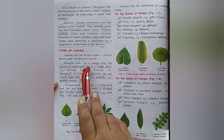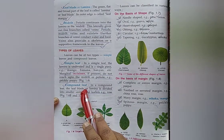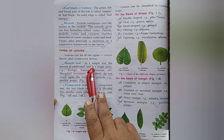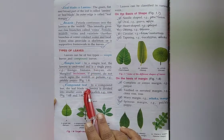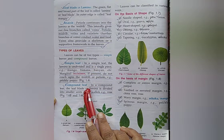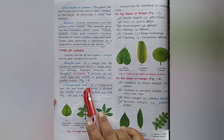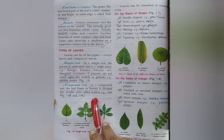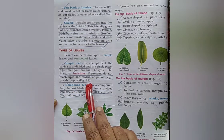Types of leaves. Write down the name of two types of leaves: Simple leaves, compound leaves. What is simple leaf? In a simple leaf, the lamina is undivided and is a single piece. Examples: Mango, banana, banyan, etc. What is compound leaf? In a compound leaf, the leaf blade or lamina is divided into smaller units called leaflets. Example: Rose, tulsi, etc. What is incisions in leaf? When margin of a leaf do not reach up to the midrib or petiole, this is called marginal incisions. Example: Prickly poppy.